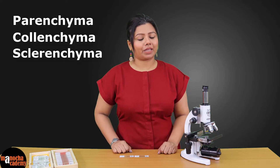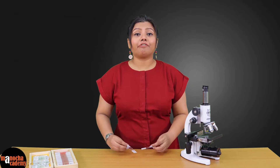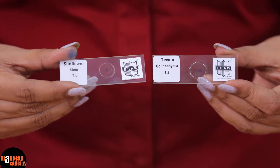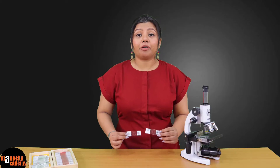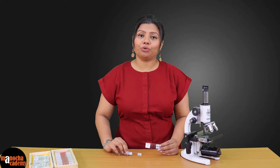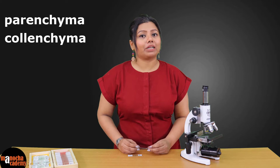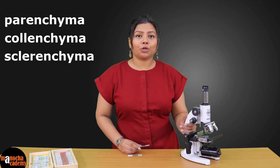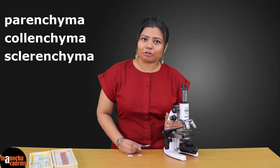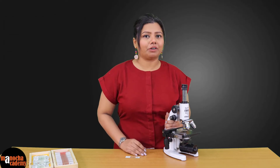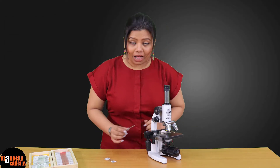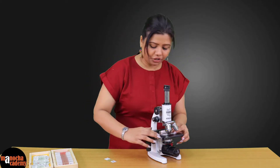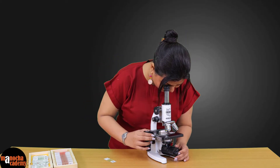For that I have two prepared permanent slides of the tissues, and I'm going to show you where the parenchyma, colenchyma, and sclerenchyma are. We will be needing a compound microscope. I will place the first slide on the stage and adjust the light of the microscope to focus the cells.